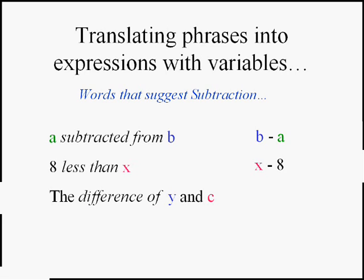The word difference infers subtraction, and we keep the same order. The difference of y and c is y minus c. And decreased by is also going to lead to subtraction. z decreased by 3 would be z minus 3. That's probably the trickiest of the four.